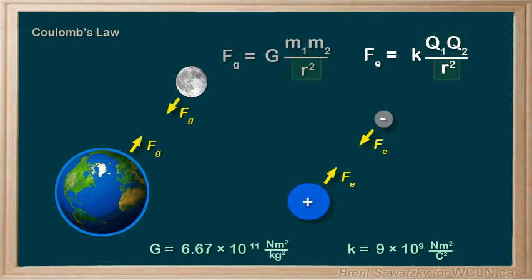In both cases, the forces decrease as the distance between the objects increase, and they drop quickly, as they are inversely related to the distance squared.